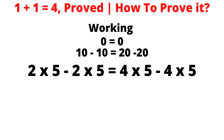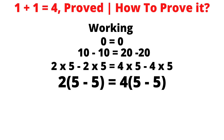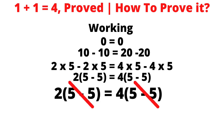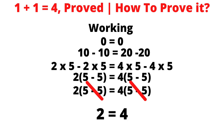Two times five minus two times five is the same as two times (five minus five), and four times five minus four times five is the same as four times (five minus five). So two times (five minus five) equals four times (five minus five). Cross the common terms, which are (five minus five), giving you two equals four.